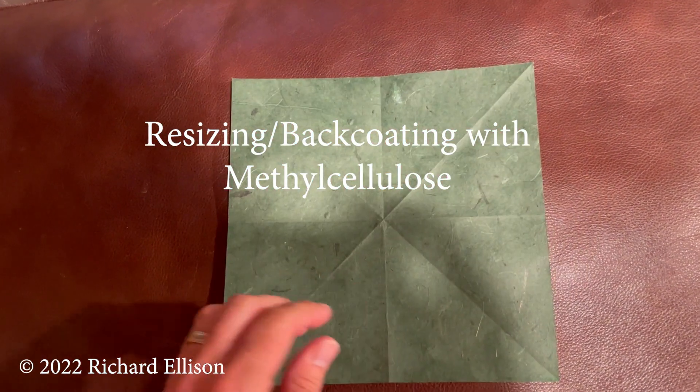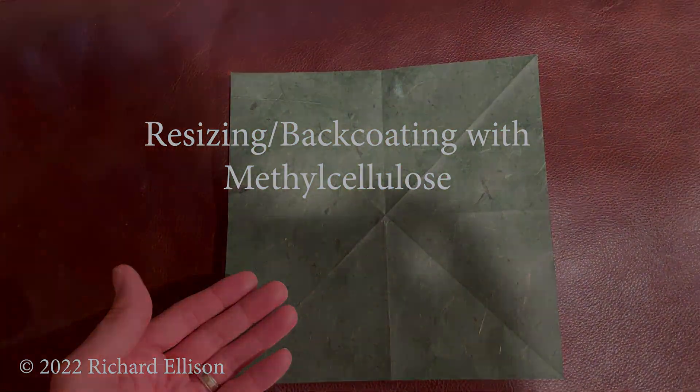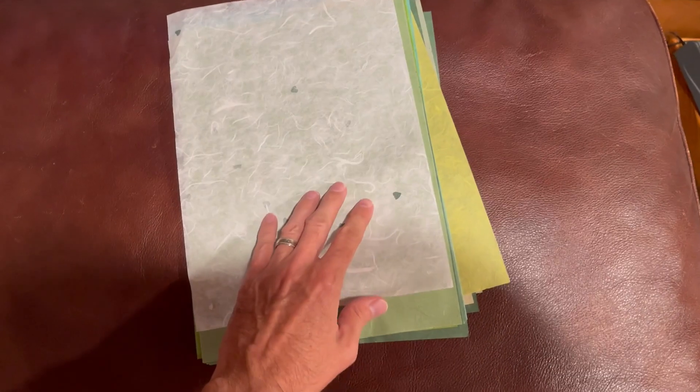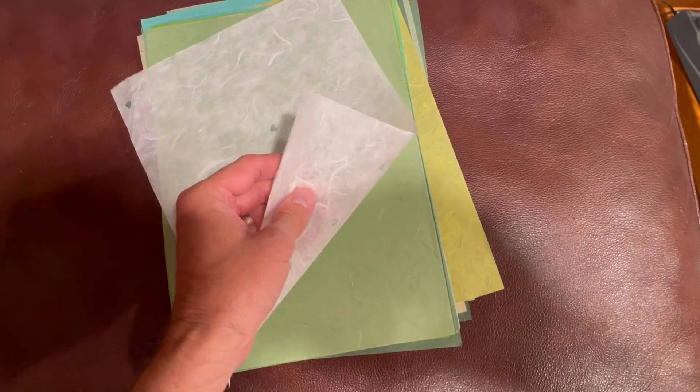Resizing and Backcoating with Methyl Cellulose. A friend gave me this package of mulberry paper. It's beautiful paper and it's very thin.